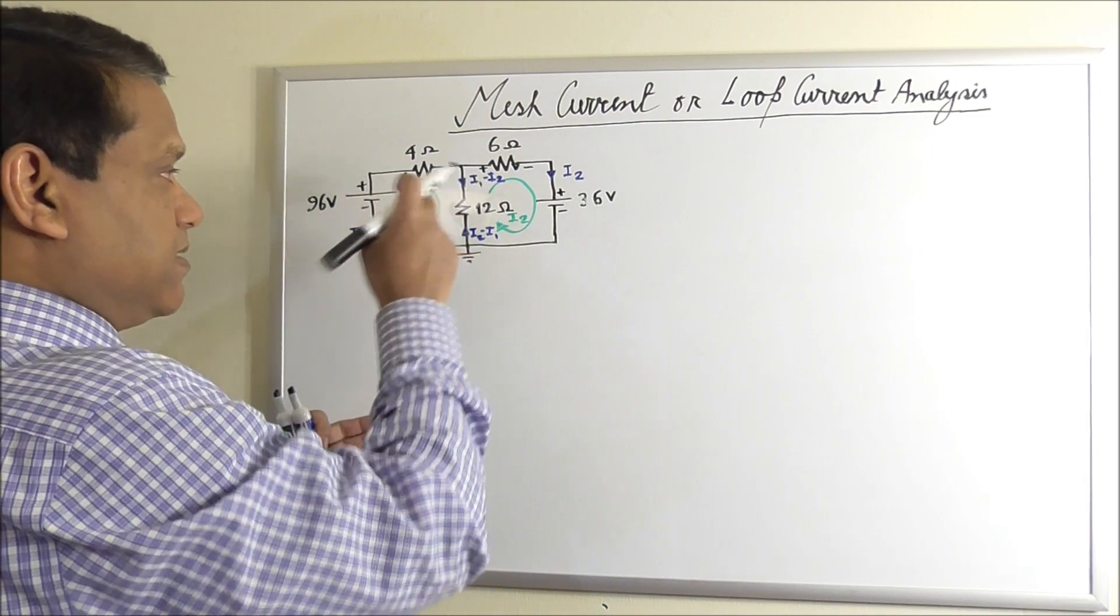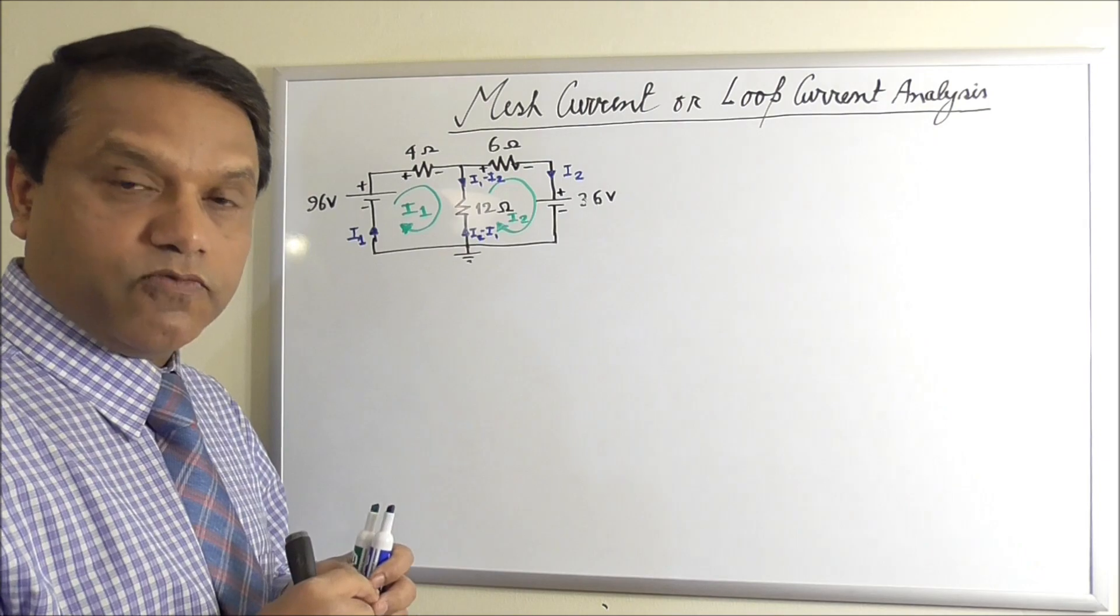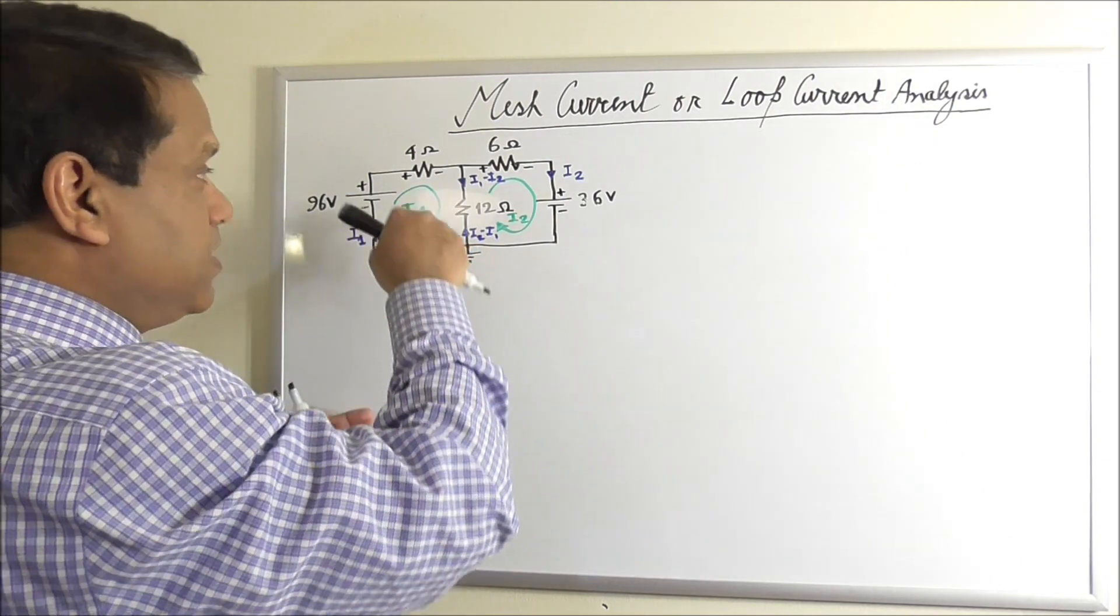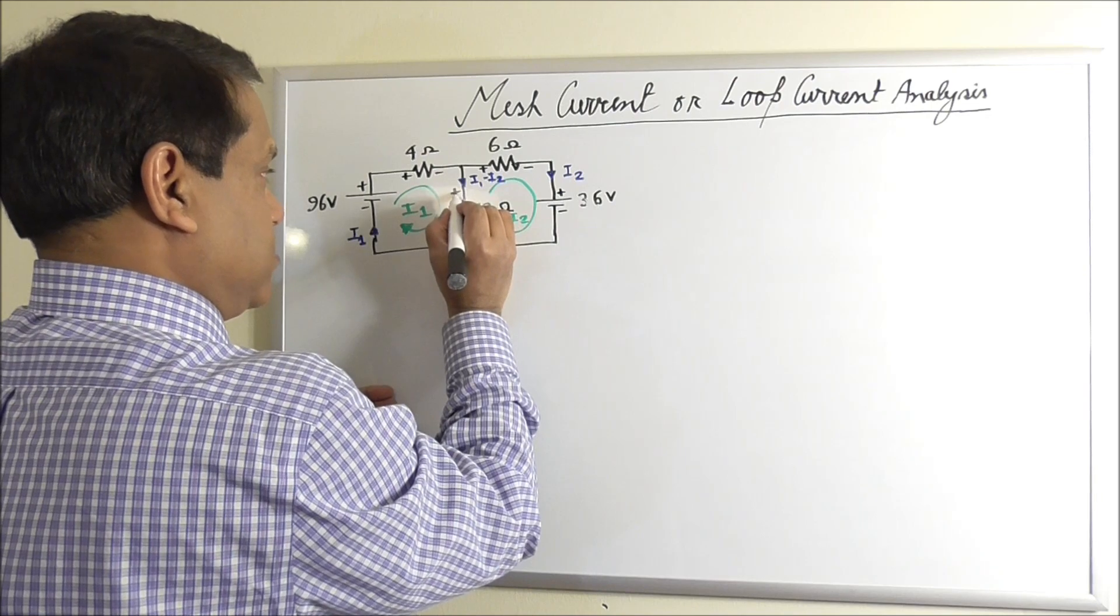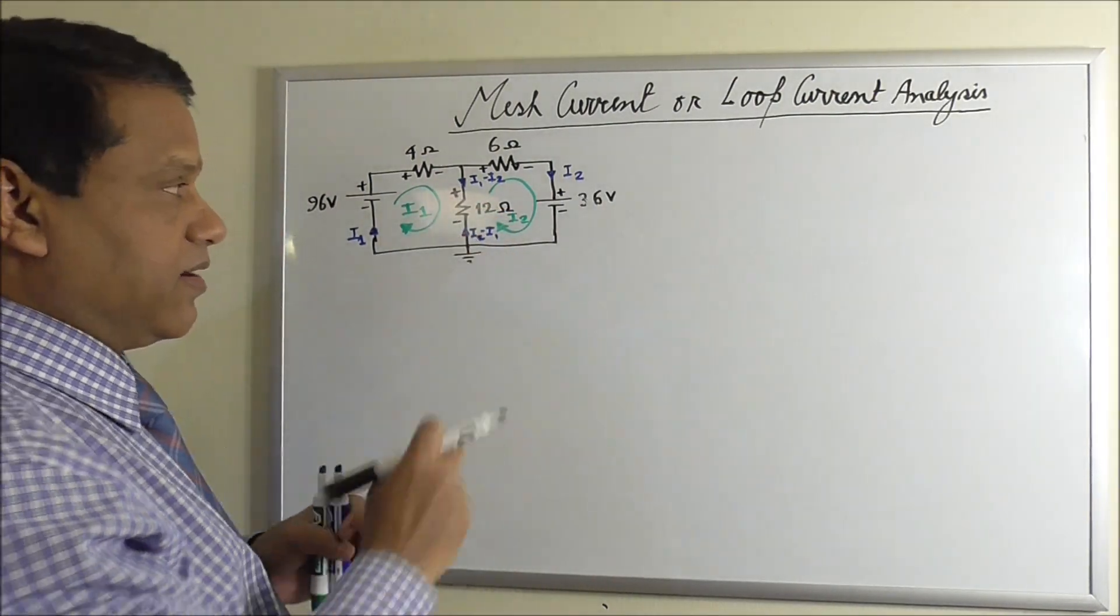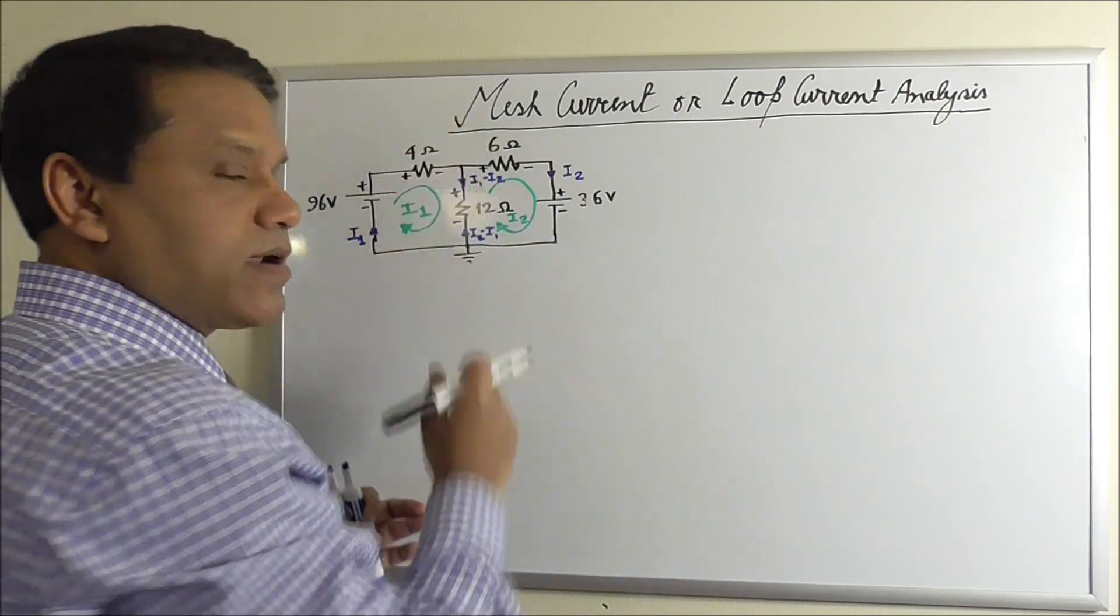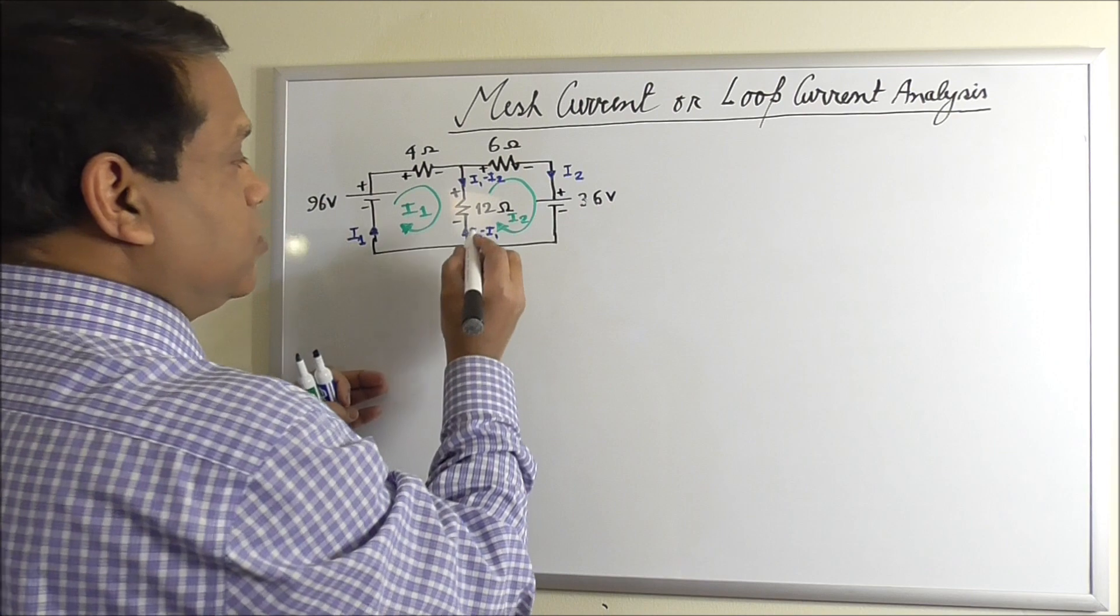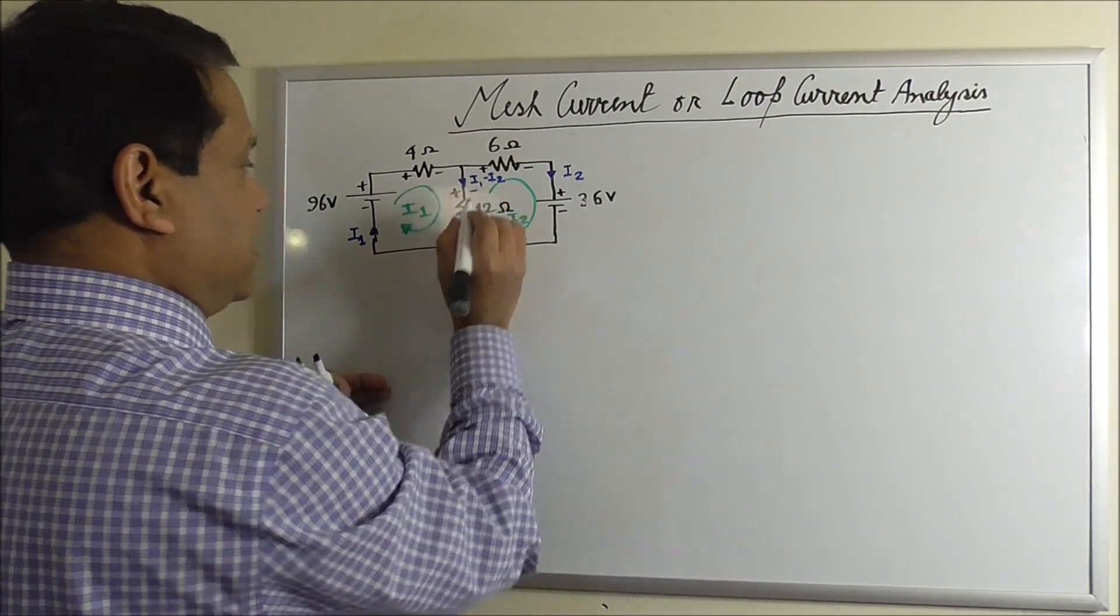Now question here. If we assume this current is downward, we will assume for writing KVL equation for this loop, it is downward, so we'll put plus on the top and minus at the bottom. And for writing KVL equation in this loop, we'll assume current is upward, I2 minus I1, so we'll put plus on this side and minus on this side.